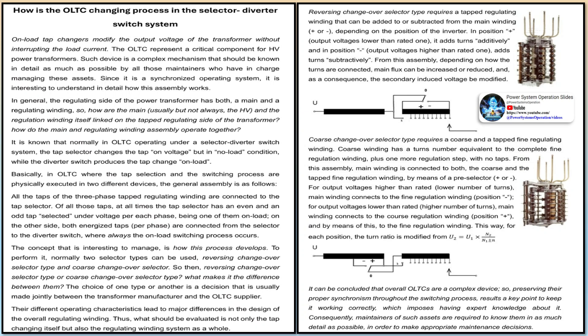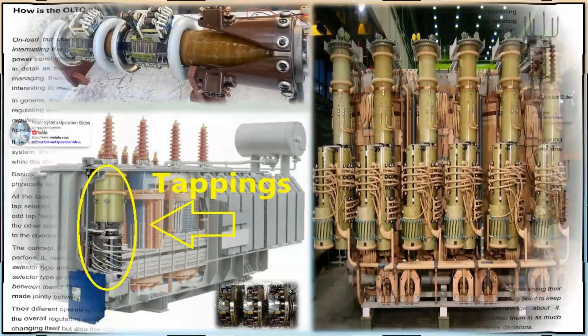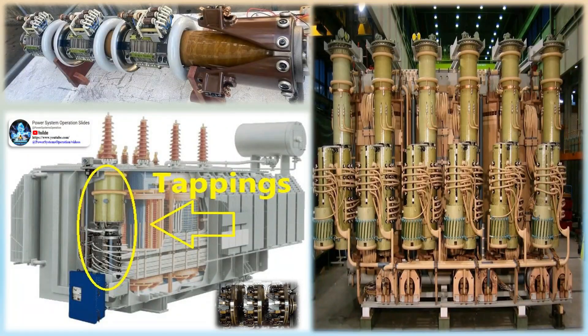On-load tap changers (OLTCs) are crucial components in the power system due to their purpose of maintaining the desired voltage output. To maintain these voltages they are required to perform frequent operations. When maintained properly and operated within design limits, these components should provide many years of reliable service.